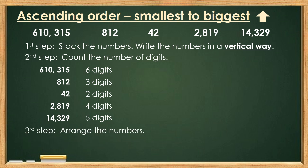Step number 3: Arrange the numbers. Since ascending order should start from the smallest number up to the biggest number, we can look at the number with the least number of digits. We can see that number 42 only has 2 digits, so it should be the smallest number. Next, 812 only has 3 digits, so it should be next. We can see that 2,819 has only 4 digits, so it should be the next number.